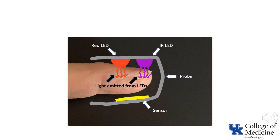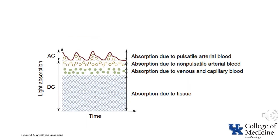This is an attempt to show the red and infrared light being emitted by the LEDs. Now think about the tissues the light must traverse to go from the LEDs to the sensor. The bulk of the tissue is cartilage, muscle, and bone of the finger. In addition, the pulse oximeter has to distinguish arterial blood from venous blood and capillary blood.